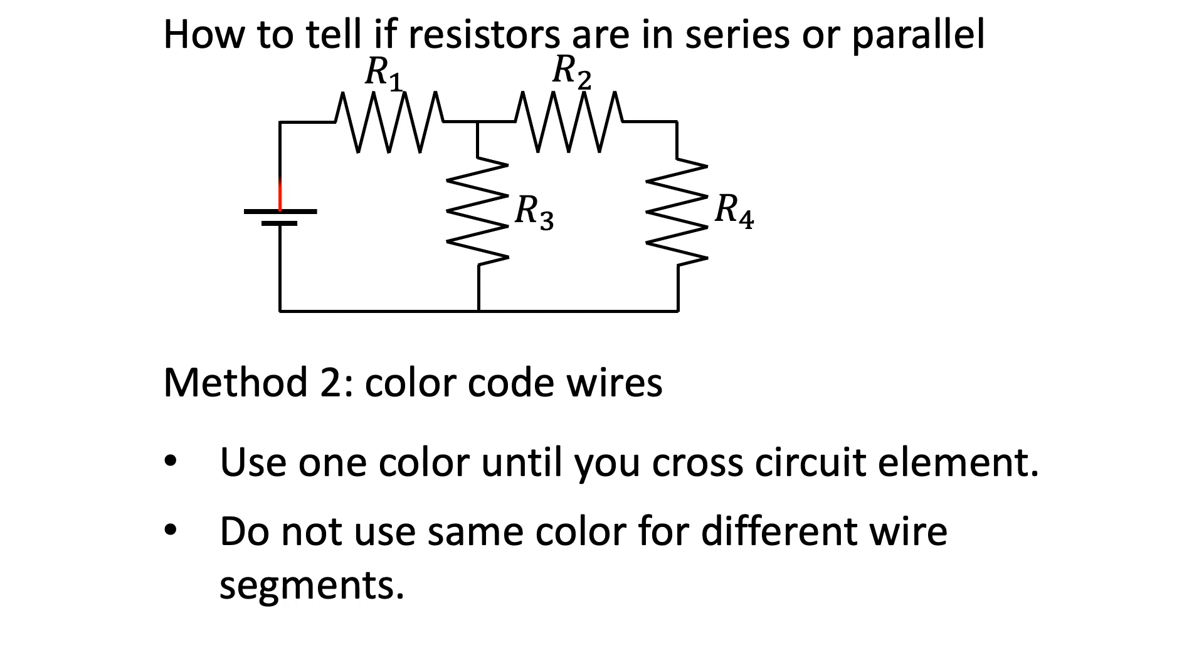Here, starting from the top end of the battery, we use red to trace the wire until we hit a resistor, in this case R1.